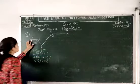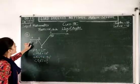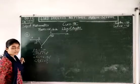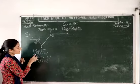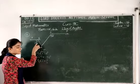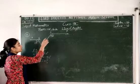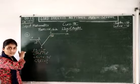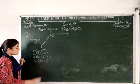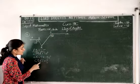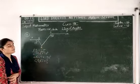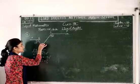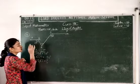Here is the figure. In this figure, it is given that PQ is parallel to ST, the angle PQR is 110 degrees, and the angle RST is 130 degrees. You have to find the angle QRS, which is formed here at this point.